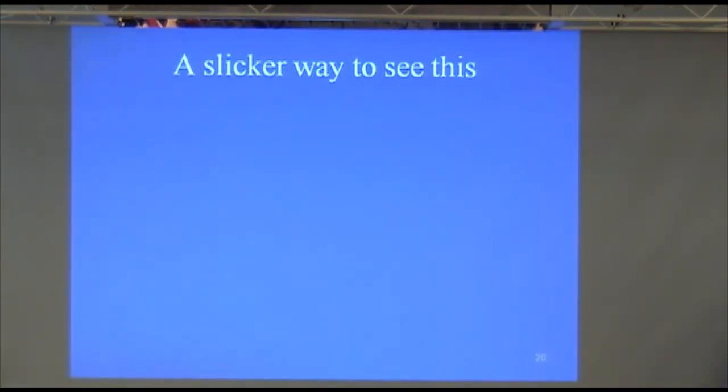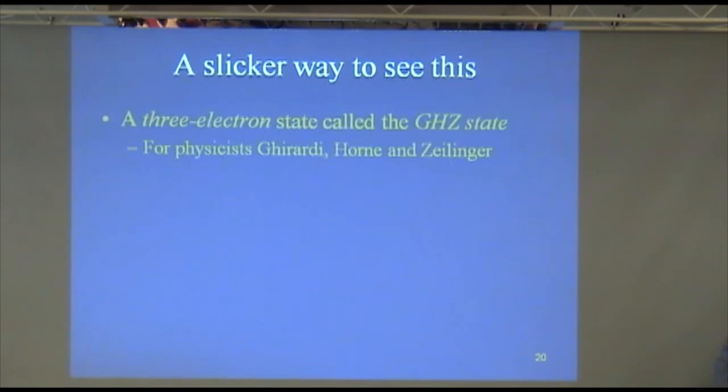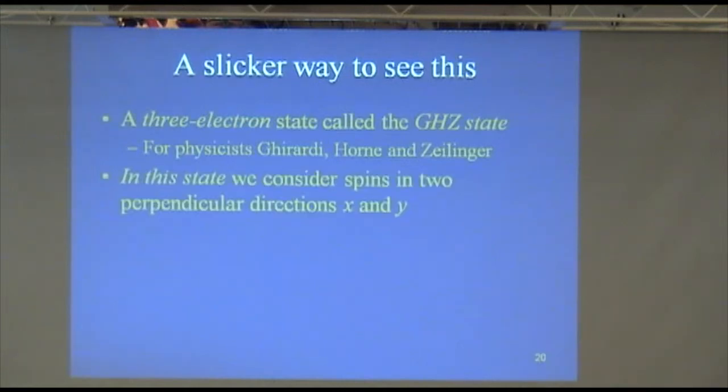There's a slick way to see this that's kind of fun and I'll just describe it briefly. EPR talked about pairs of systems. You can do a slick little thing with three systems and you don't need to have any probabilities. It's named after three physicists, Greenberger, Horne, and Zeilinger, and it's called the GHZ state, but that's just background. Here's what happens. We've got Alice, Bob, and Carol. Carol is usually the third person in this scenario. You need an extra one.